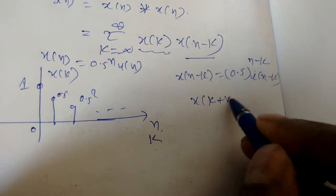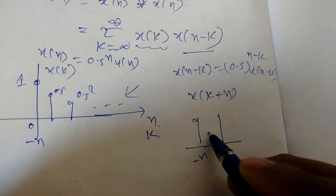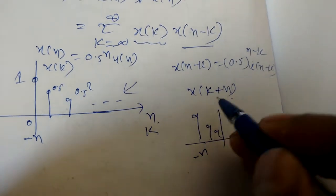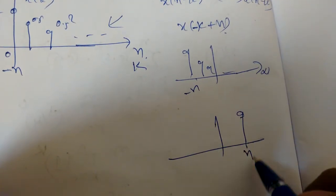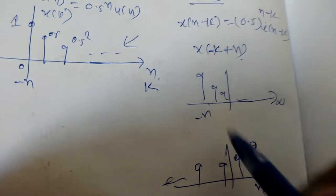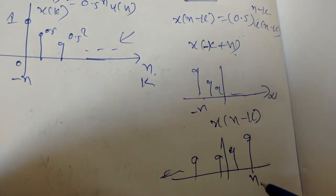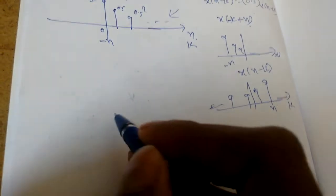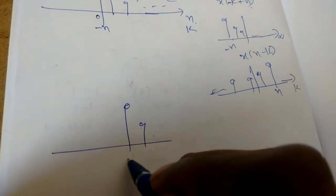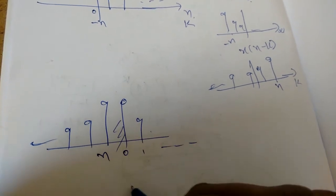To find x(n-k) graphically, first find x(k+n) by left-shifting — this goes from -n to infinity. Then reversing gives x(n-k), which goes from n down to minus infinity. So we fix x(k) starting at 0, and slide x(n-k). When n < 0, there is no common area, so y(n) = 0 for n less than 0.